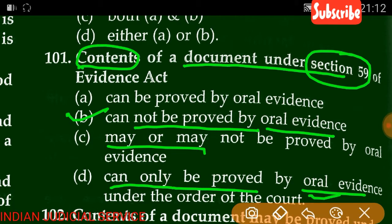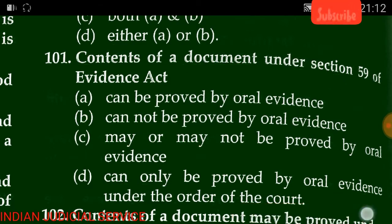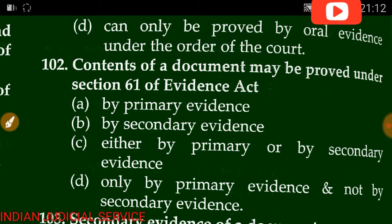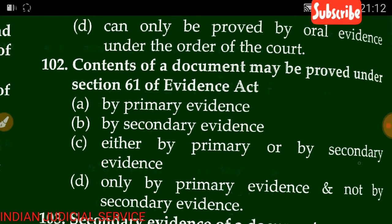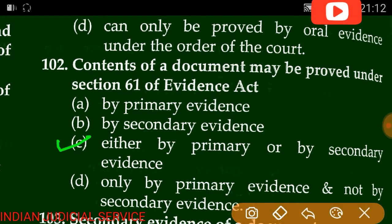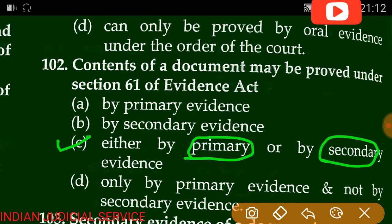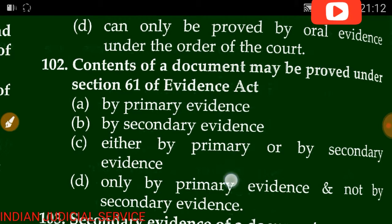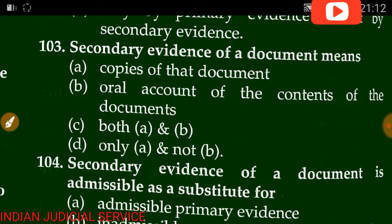Question number 102: Content of a document may be proved under Section 61 of Evidence Act — by primary evidence, by secondary evidence, either by primary or secondary, or only by primary evidence not by secondary. The answer is C — either by primary or secondary evidence. Both types of documents can be proved either by primary or secondary evidence.